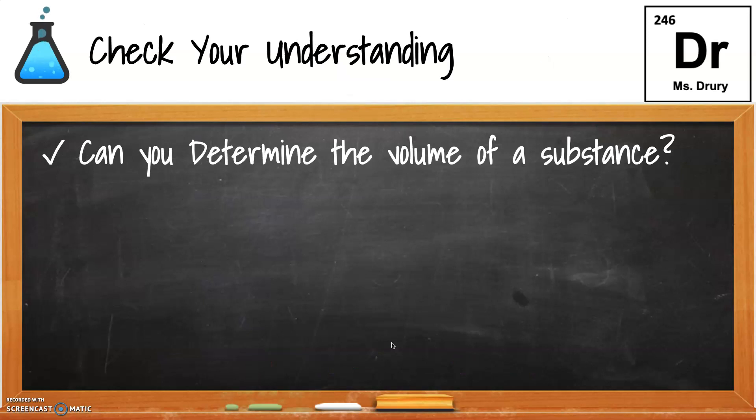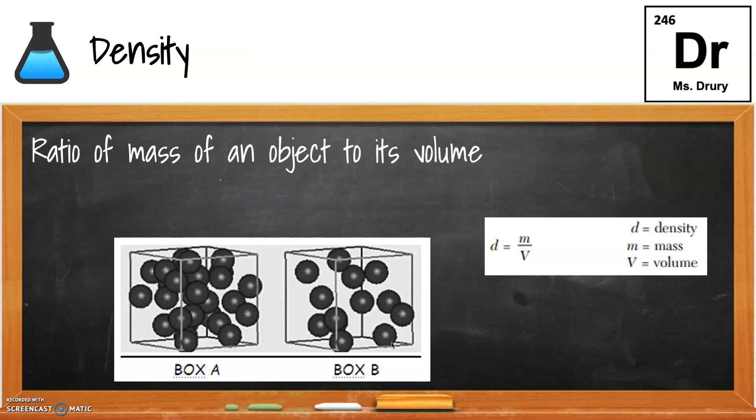So at this point, you should be able to determine the volume of a substance. Putting that together, we define the density. The density is a ratio of the mass to the volume. This formula is on the back of your reference table T, and it defines what D, M, and V all are.